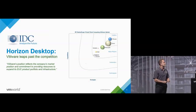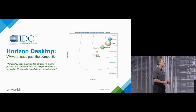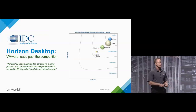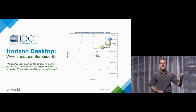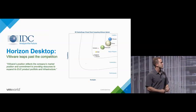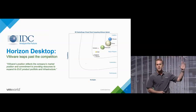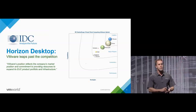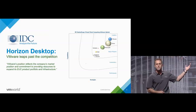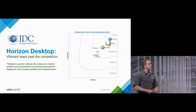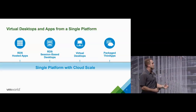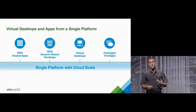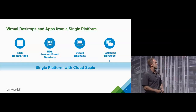Here's the IDC quadrant slide released earlier this year. After several acquisitions and investments in our own product, and releasing RDSH in View last year, IDC felt that VMware has leapfrogged Citrix into the leader in the virtual desktop space. How many people have replaced Citrix with Horizon? Not many. What about replaced Horizon with Citrix? RDS hosted apps was probably a key area where we lagged behind Citrix until last year when we released hosted applications. As of View 6.2 we've added 3D capability to RDS apps, session desktops, virtual desktops, and thin apps.